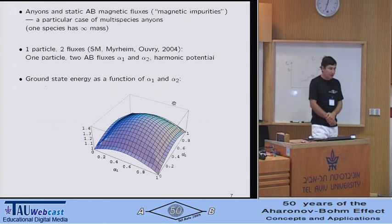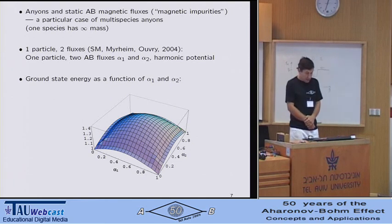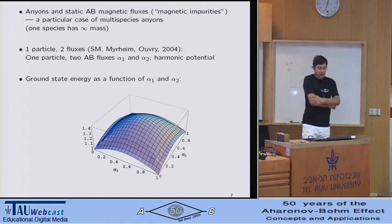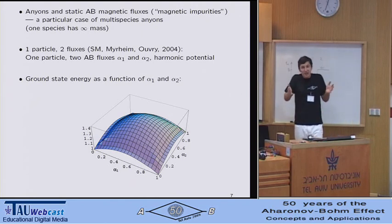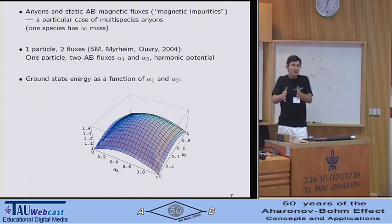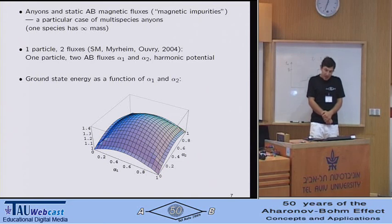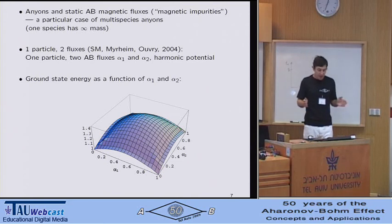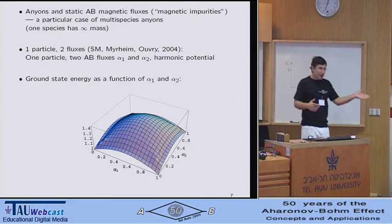I will conclude my talk then by briefly illustrating two results that have to do with a particular case of multi-species anyons namely the problems involving anyons and static Aharonov-Bohm magnetic fluxes. The fluxes are just multi-species anyons with infinite mass which is why they are static. Sometimes we call these magnetic impurities. The two-body problem is again trivial and of the three-body problems there are two: one particle plus two fluxes or two particles plus one flux.